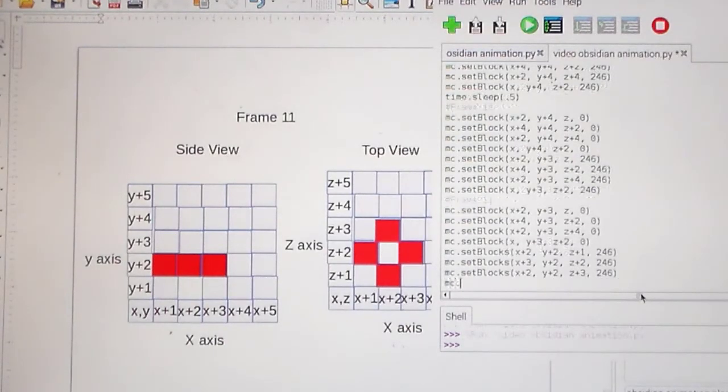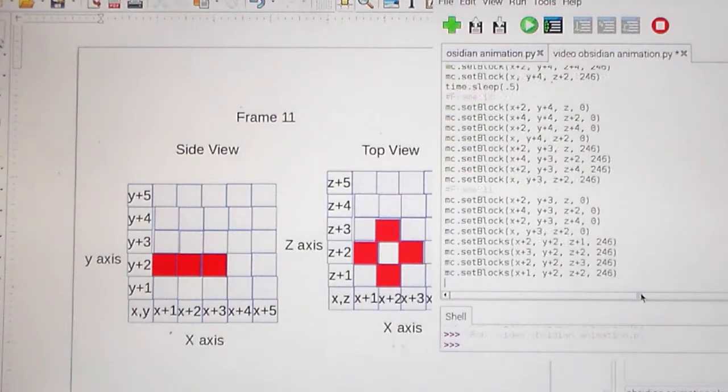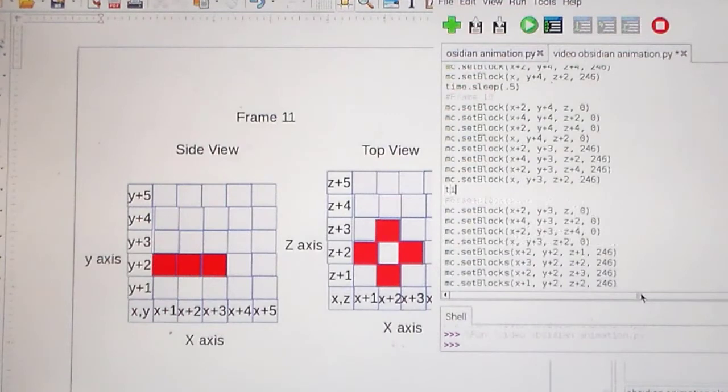And the block on the left on the X, Z is our last block we have to deal with. That's X plus 1, Y plus 2, Z plus 3. Oh, it looks like I made a little mistake. I wrote set blocks instead of set block. Well, I'll run this and I'll show you what this is going to look like. Oh, and I need to time that sleep up here.